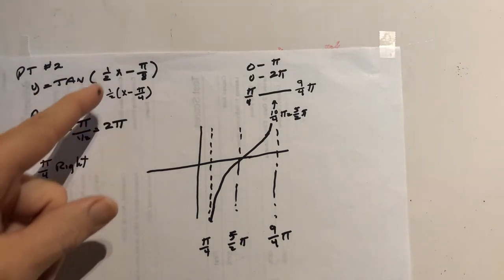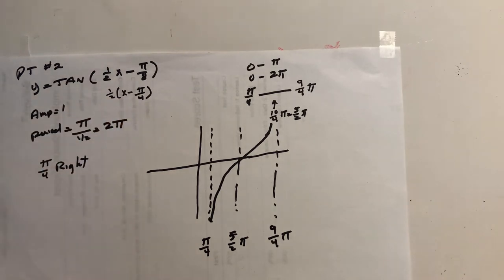Factor out the 1 half, pi over 8 becomes pi over 4, so it's shifted pi over 4 to the right.